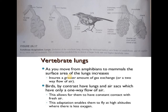Fish are directly connected to water so gaseous exchange is easy. When amphibians moved to land, they required more oxygen compared to fishes. Reptiles, birds, and mammals require even more efficient mechanisms. As organisms evolved, the surface area of the lungs increased so they could get proper ventilation and greater gaseous exchange.